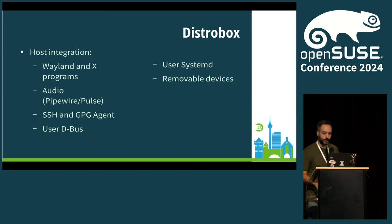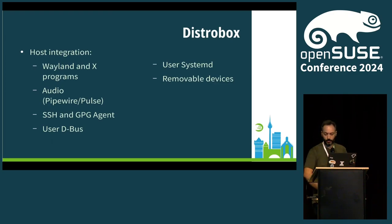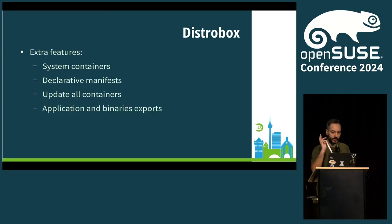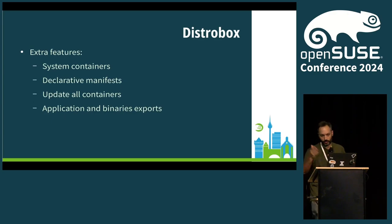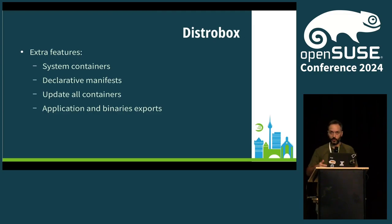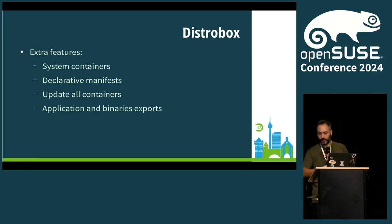The host integration covers Wayland and X, so you can launch graphical applications from it. Full audio integration, SSH, D-bus, removable devices, and the user session of SystemD. There are also extra features: you can create actual system containers with DistroBox. Even without LXC or Incus, you can create a SystemD container using Podman, Docker, or Lillipod. It's also possible to have a manifest so you can define your environments declaratively, and it has commands to export binaries and applications so that integration with the host is even more seamless.